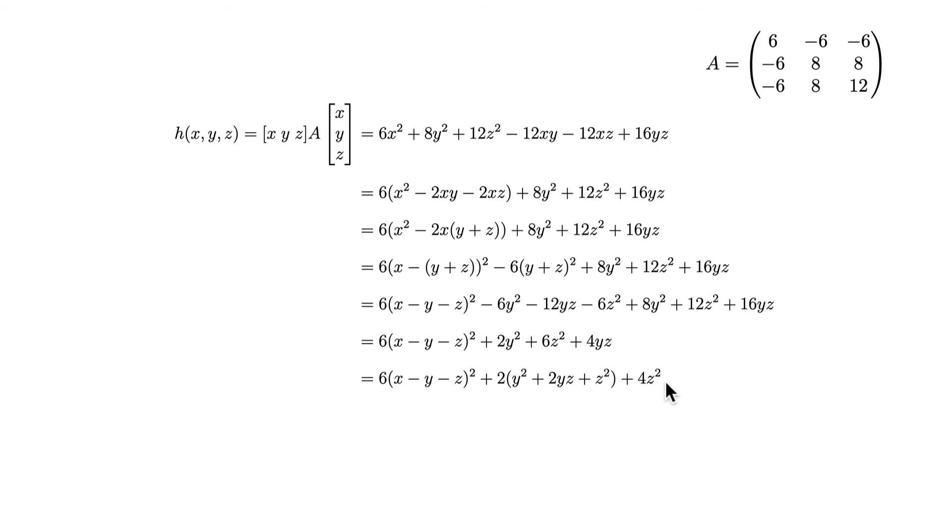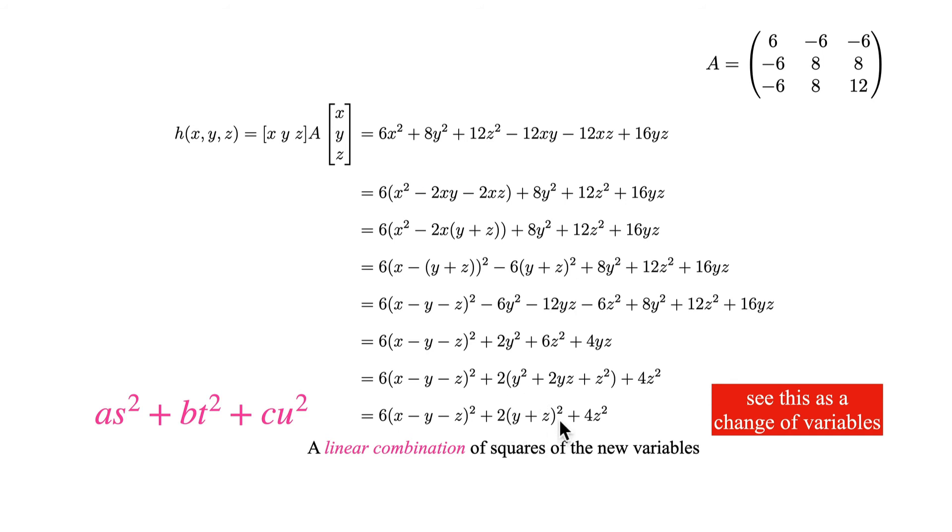What I have left here outside this parenthesis is 4z squared, because I get 2z squared plus 4z squared is 6z squared. These two elements are completely included in this perfect square. This perfect square is, of course, y plus z all squared. So you see that we indeed got some coefficient a equal to 6 times s squared, plus some other coefficient b equal to 2 times t squared, plus the third coefficient c equal to 4 times u squared. u is simply equal to z.